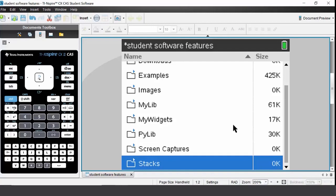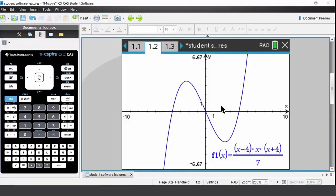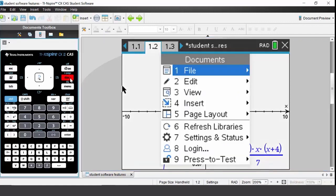You may wish to create a document on the handheld and save it to a folder on the handheld. To do that, come to the document that you have created on your handheld. You now want to save it directly onto your handheld. To do that, press the dot key. Option 1 is file.